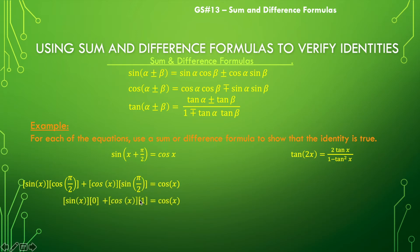Looking at what we have: sine of x times 0 just goes away, and we add the product of cosine of x times 1, which becomes cosine of x. I have shown that the left-hand side and the right-hand side are truly equal to each other.